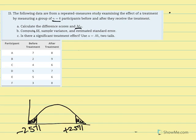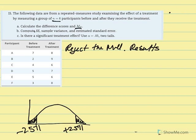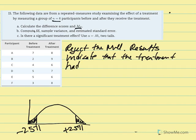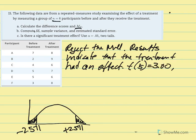Although we weren't asked to, we can write our concluding statement. We reject the null based on our T statistic and conclude that the results indicate that the treatment had an effect. We conducted a T-test where degrees of freedom was equal to 5, our T statistic was equal to 3, and the probability of obtaining that T statistic is less than a 5% chance if the null is true.